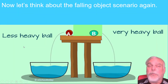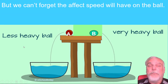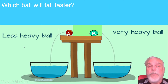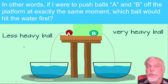Now let's think about that falling object scenario. We saw that the heavier or more massive object is going to cause a bigger splash than the lighter object. But we can't forget the effect speed will have on the ball. So which ball — A or B — is going to fall faster? In other words, if I push both balls off the platform at exactly the same moment, which ball is going to hit the water first?